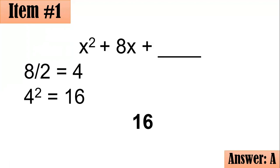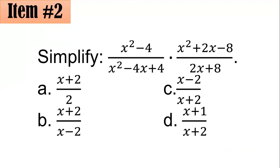Number two. Simplify x squared minus 4 all over x squared minus 4x plus 4 times the ratio of x squared plus 2x minus 8 and 2x plus 8. Which of A, B, C, or D do you think is correct?